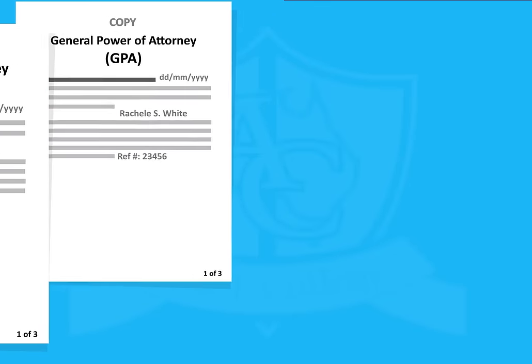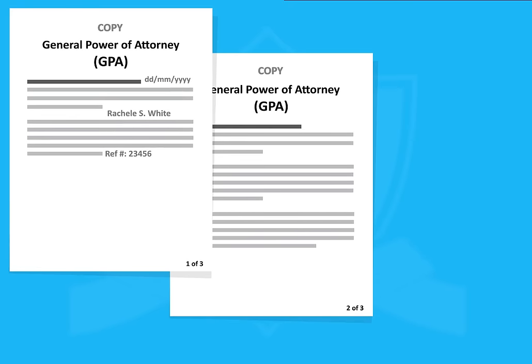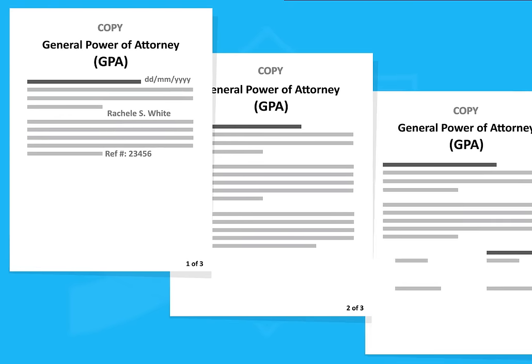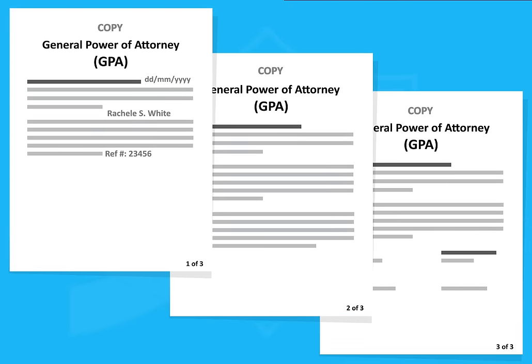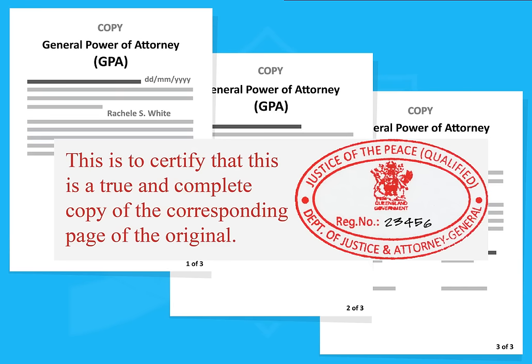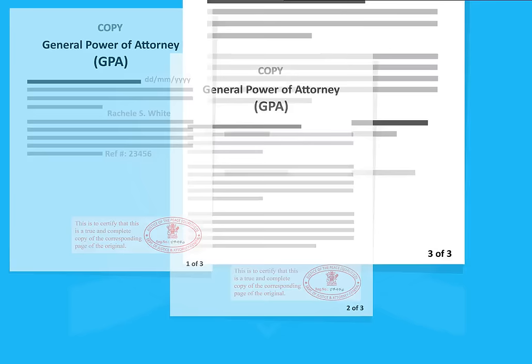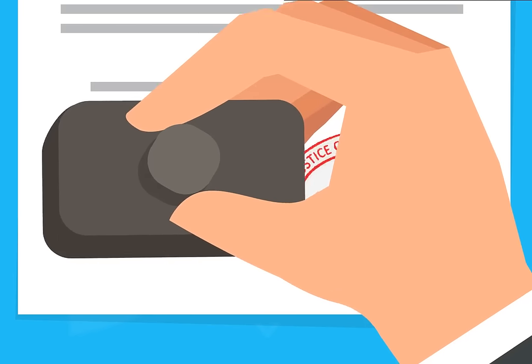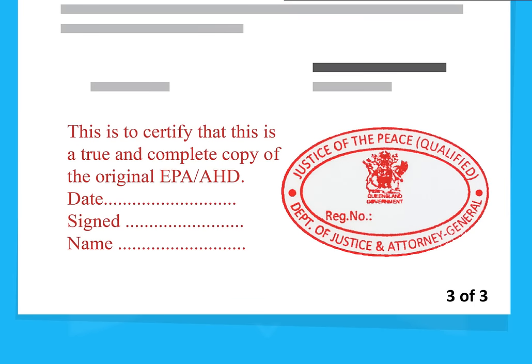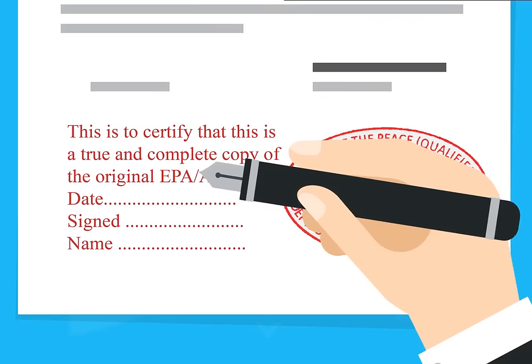Now you can certify the copy. You should certify every page except the last with: "This is to certify that this is a true and complete copy of the corresponding page of the original." On the last page, write: "This is to certify that this is a true and complete copy of the original EPA/AHD."